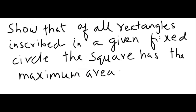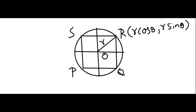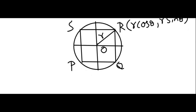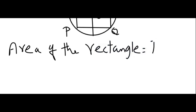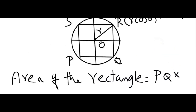Now let us do a word problem: show that of all rectangles inscribed in a given fixed circle, the square has the maximum area. Let the circle have center O, and let PQRS be the rectangle inside the circle. R is the radius of the circle, and the coordinates in parametric form are given by (R cos θ, R sin θ). The area of rectangle PQRS is given by PQ × RQ.